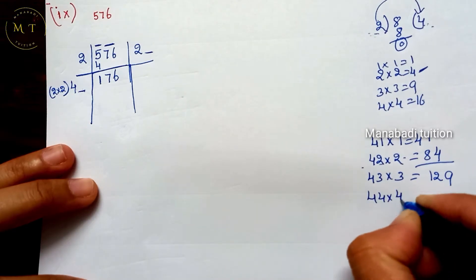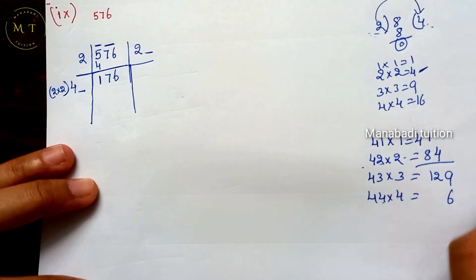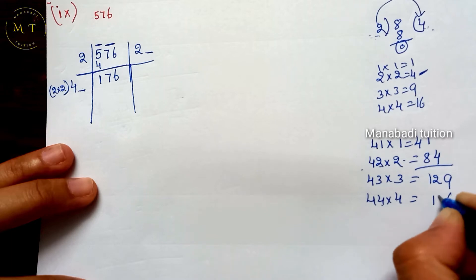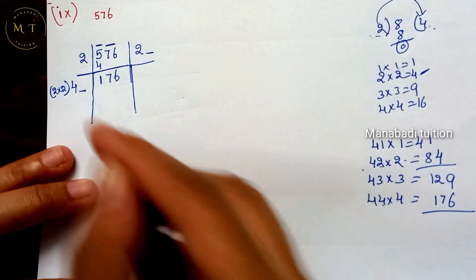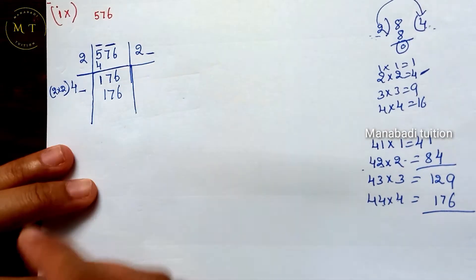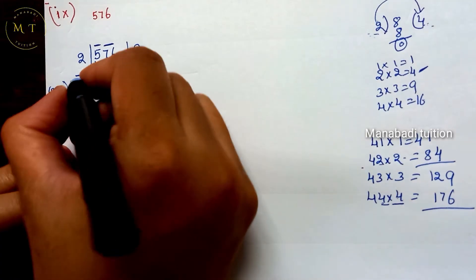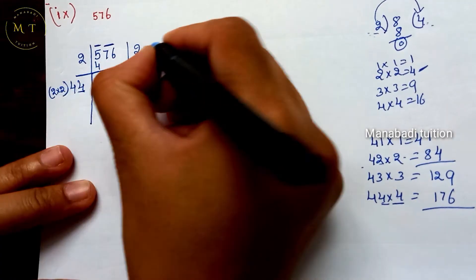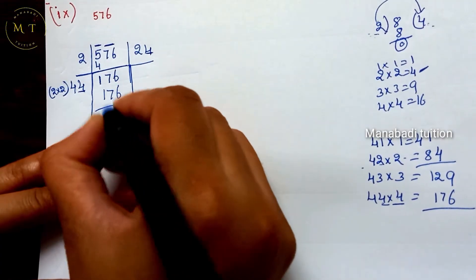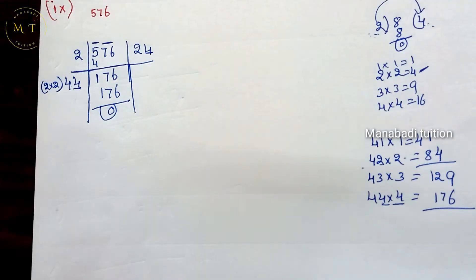44×4: 4×4 is 16, 4×4 is 16. 16 plus 1 is 17. So, 176. So, 4, 30. Here is 4. You have 176. Remainder is 0.